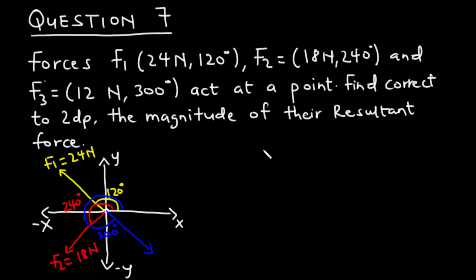From the graph, F1 which is 24 newtons makes an angle of 120 degrees with the positive x-axis. F2 which is 18 newtons makes an angle of 240 degrees to the positive x-axis, and F3 at 12 newtons makes an angle of 300 degrees with the positive x-axis.